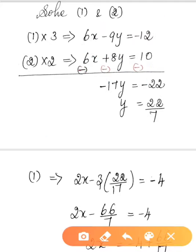The negatives cancel, so 17y equals 22, giving y equal to 22 by 17.